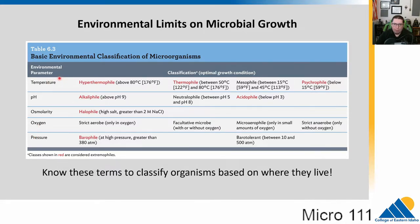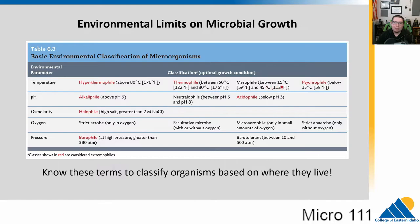For temperature, we have different ranges. Hyperthermophiles can survive above 80°C. Thermophiles like pretty hot — above human body temperature, roughly 50°C to 80°C. Mesophiles live between 15°C and 45°C; you'll notice human body temperature of 37°C falls in this range. And things that like cold are called psychrophiles. For pH, alkalophiles like above 9, neutralophiles like around 7 (between 5 and 8), and acidophiles like acidic environments below 4.